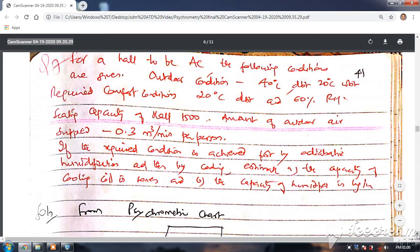We will look at one more important numerical from video examinations on designing of air conditioning halls. This is a tenth numerical for a hall to be air conditioned. The following conditions are given: outdoor condition 40 degrees centigrade dry bulb temperature and 20 degrees centigrade wet bulb temperature.